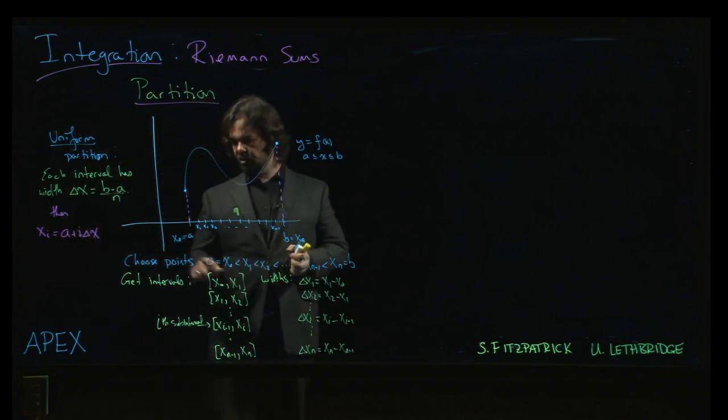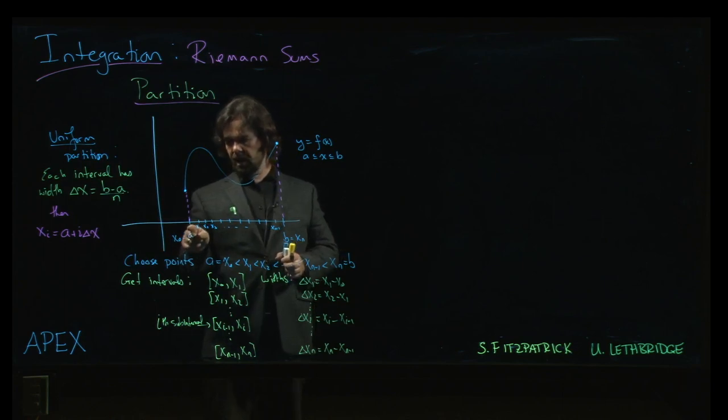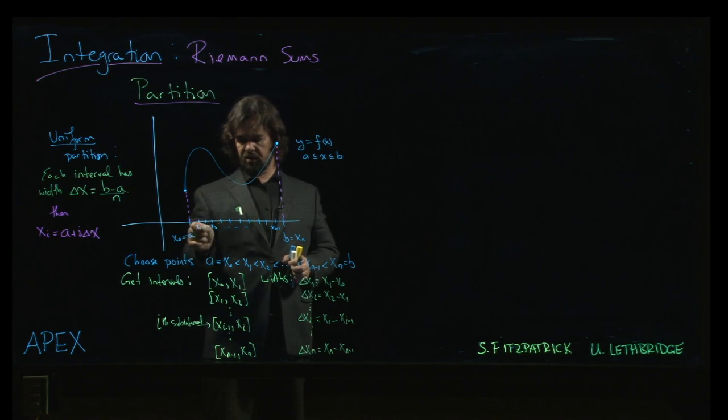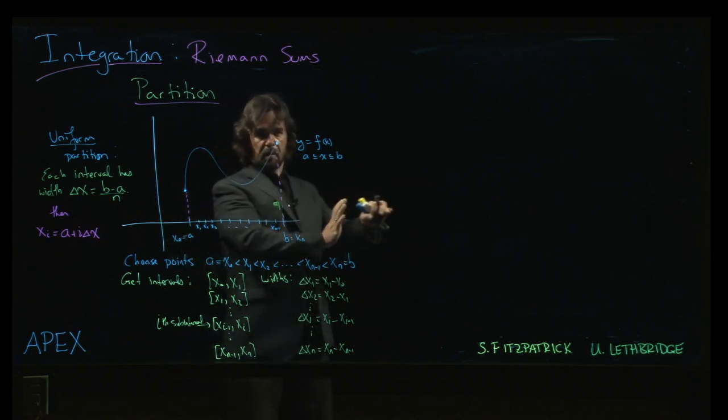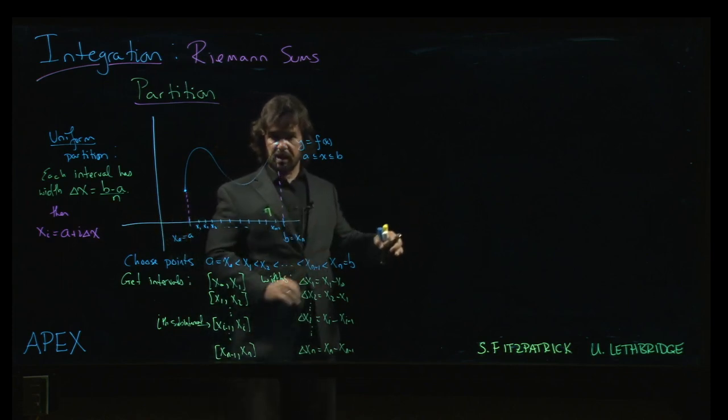So x0 is just a, i equals 0. x1, we add delta x once to get to x1. We add it twice to get to x2, three times to get to x3, and so on. So that index i is just keeping track of how many steps along the way we've gone, how many delta x's we need.